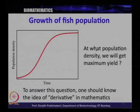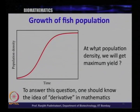In this fish case, let us ask: at what population density will you get maximum yield? To understand when we get maximum yield, one has to understand the mathematical idea called derivative. This is a mathematical idea in the field of mathematics called calculus, which can be used to answer this question. By answering this question, you can get a lot of yield and understand more about the system.